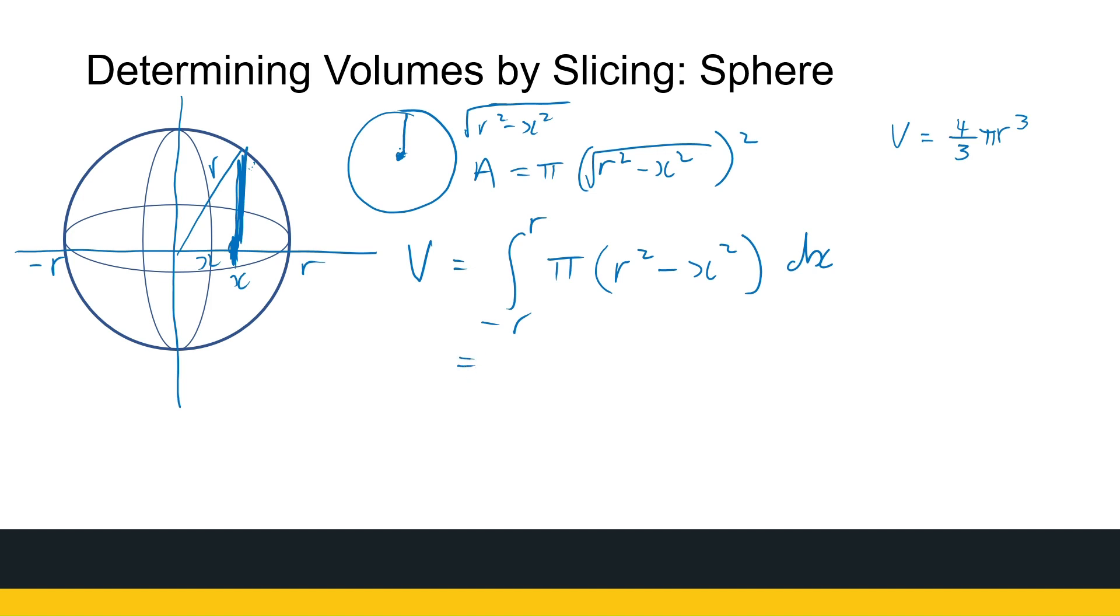So that gives me the integral from minus R to R. I can take pi out, and I have R squared minus X squared, dx.